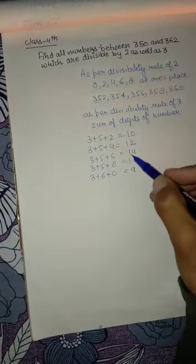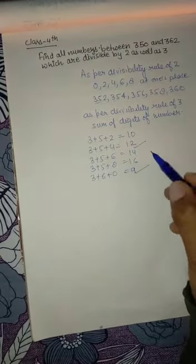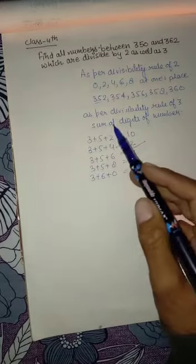The sums that are divisible by 3 are 12 and 9. As we know, if the sum of digits is divisible by 3, then the number is also divisible by 3.